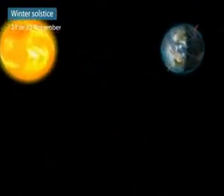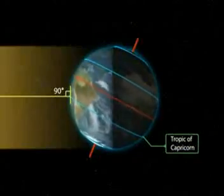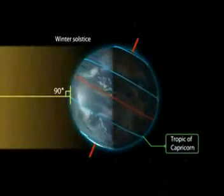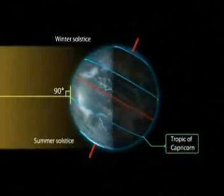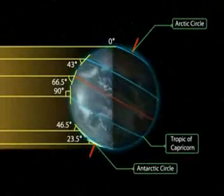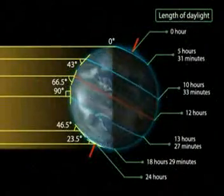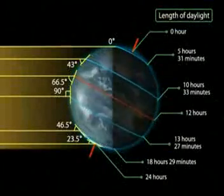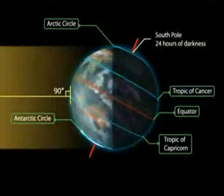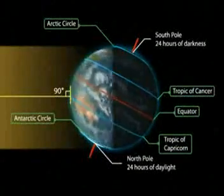Winter Solstice: On the 21st or 22nd of December, the overhead sun is over the Tropic of Capricorn. It receives the largest amount of solar radiation. On this day, the northern hemisphere is in the winter solstice, while the southern hemisphere is in the summer solstice. The angle of the sun decreases towards the poles. The length of daytime in the northern hemisphere is the shortest in the year, while that of the southern hemisphere is the longest in the year. There are 24 hours of darkness at the Arctic Circle, and 24 hours of daylight at the Antarctic Circle.